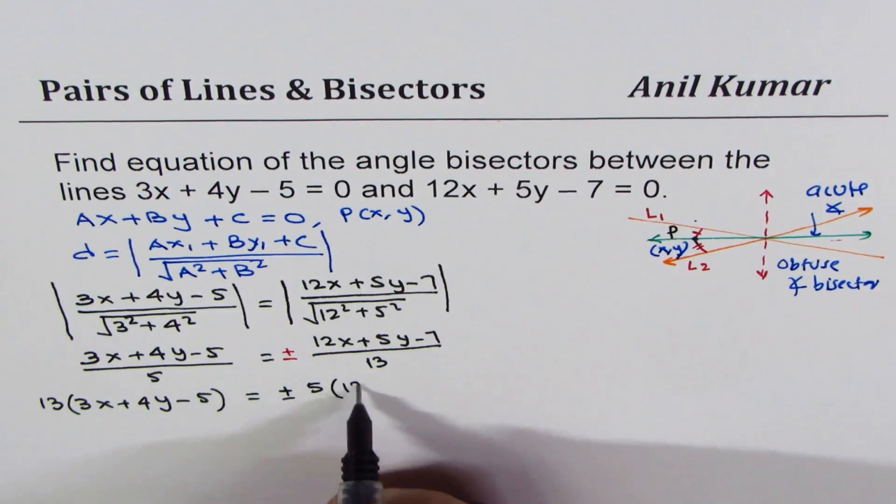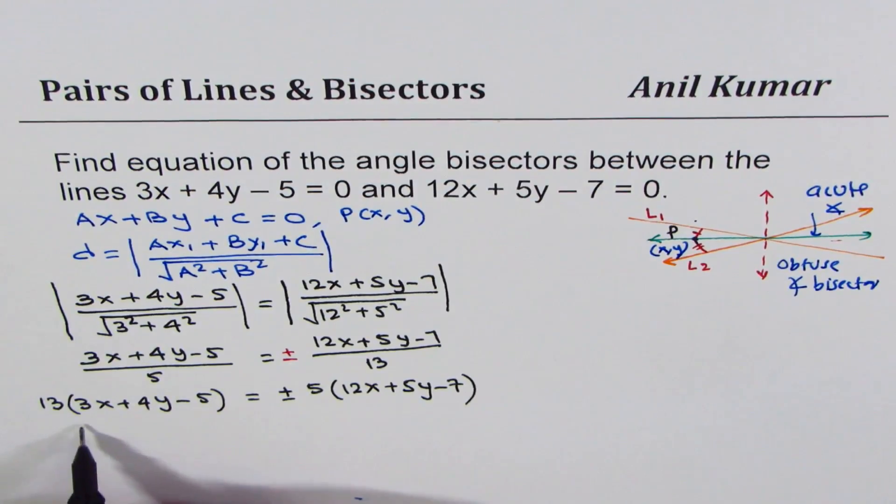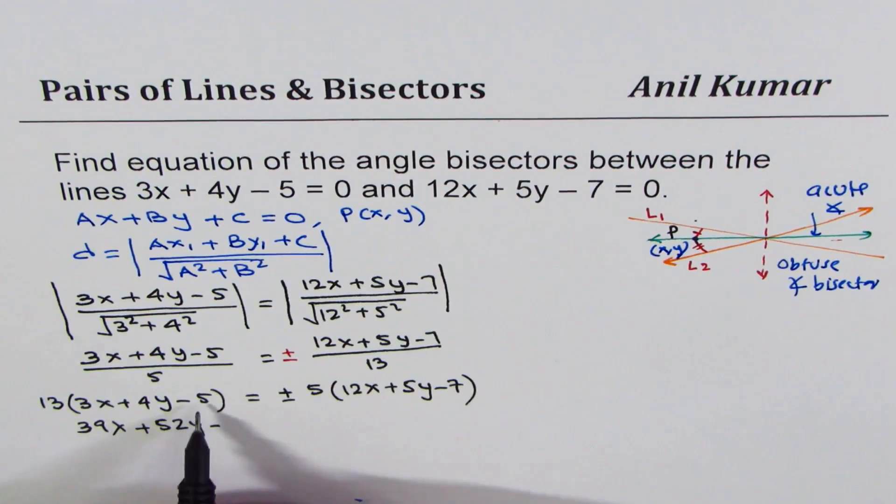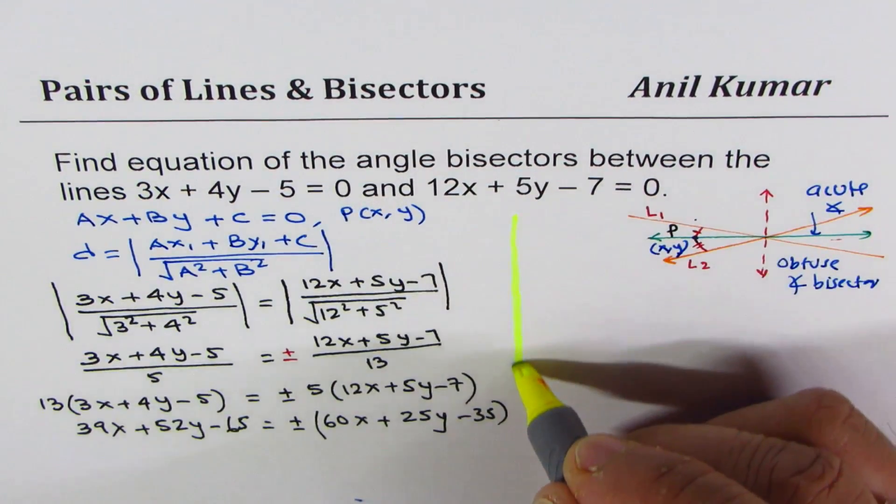Opening the brackets: 39x + 52y - 65 = ±(60x + 25y - 35). This gives two different equations, one with plus and one with minus, corresponding to our two angle bisectors.